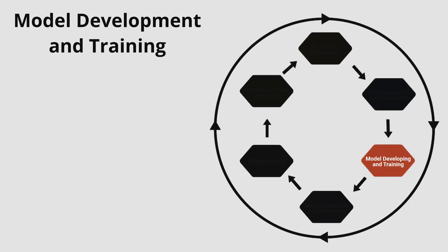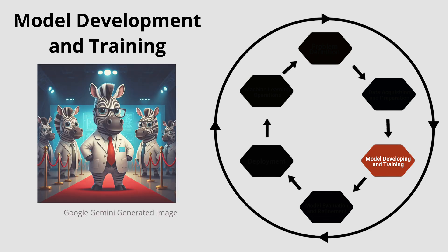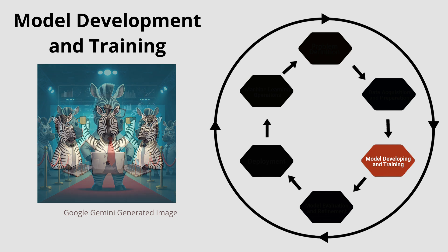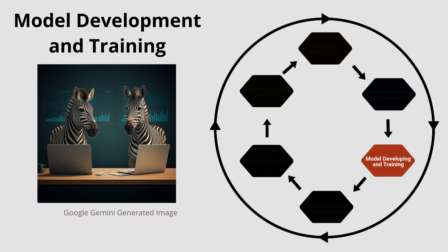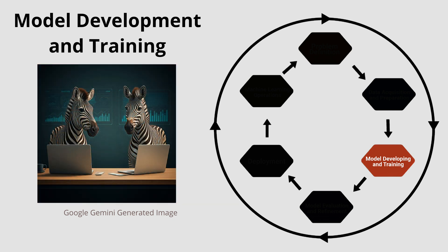The third phase is model development and training. This stage is what data scientists are most famous for. Here you develop a machine learning model to solve the defined problem and train it with the prepared data. This stage is iterative, often involving multiple rounds of model development and refinement based on the model's performance during training.